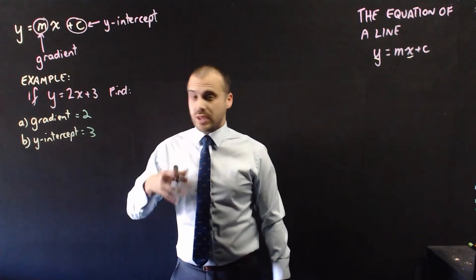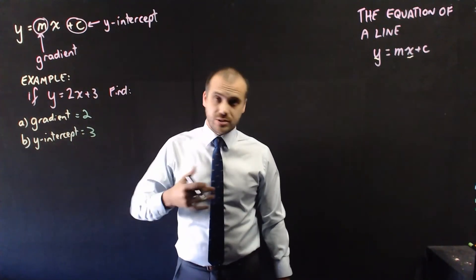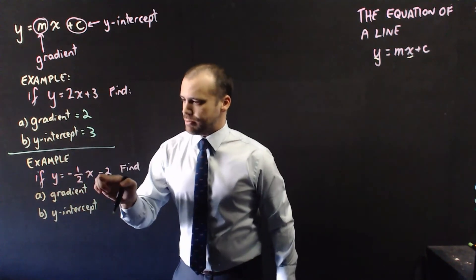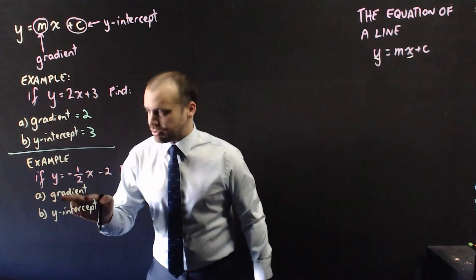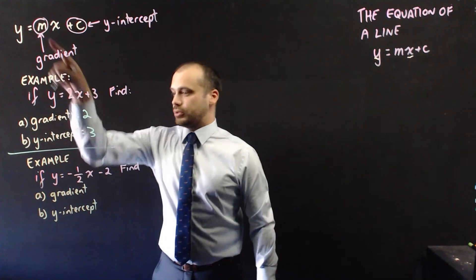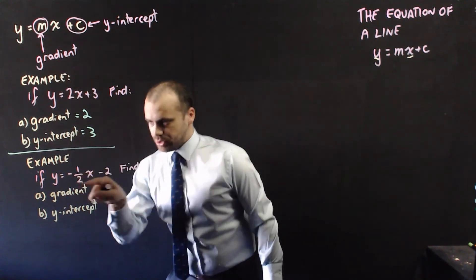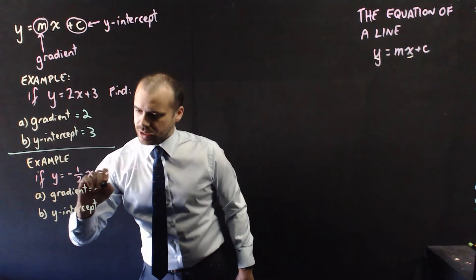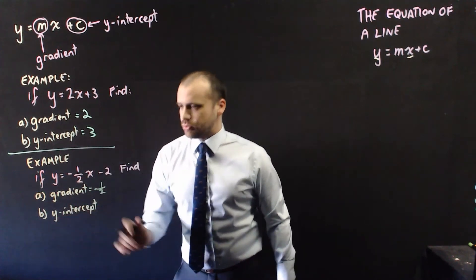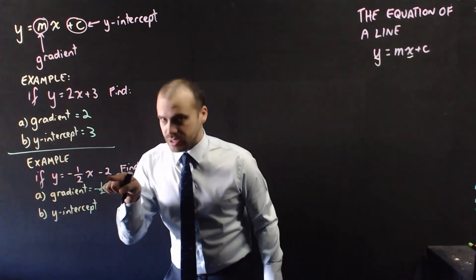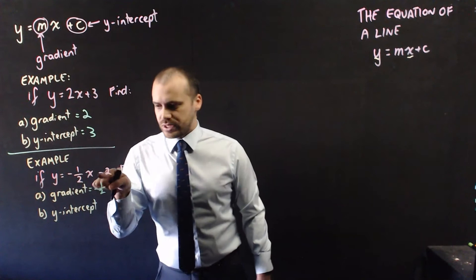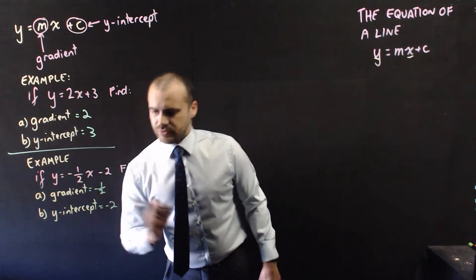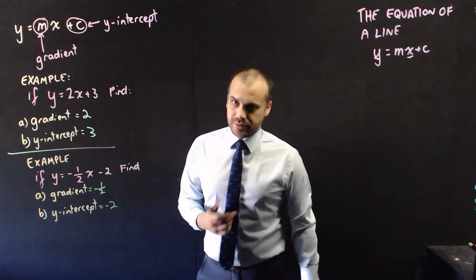Now these can be positive, negative, they can be fractions. So in this example, if y equals negative one-half x minus 2, find the gradient. Well, the gradient is the thing that x is multiplied by, which equals negative one-half. And find the y-intercept — don't forget to bring the sign along with it. The y-intercept is negative 2. Simple as that.